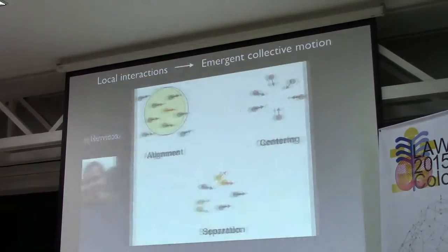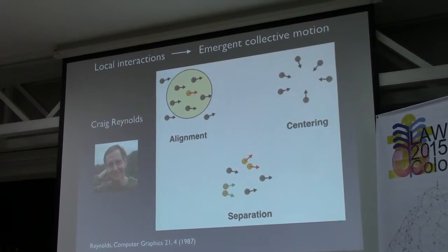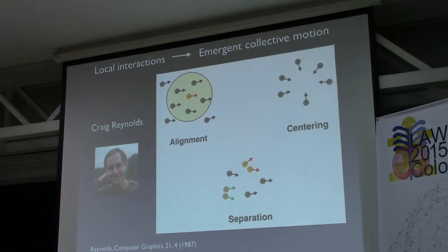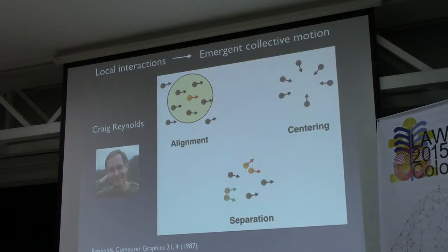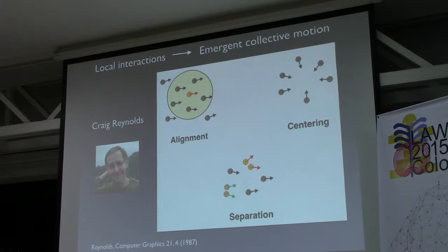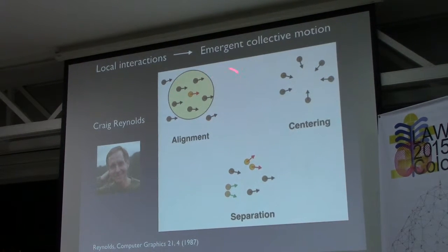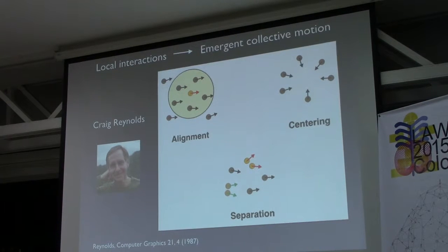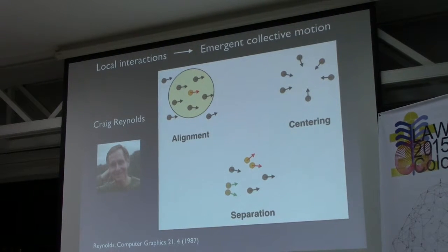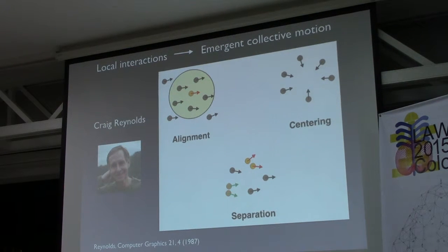In 1987, this guy, a computer systems engineer, was asked to develop simulation for a flock for a movie. He came up with these three basic flocking behavior rules: alignment, that particles try to align their velocity; cohesion, that they try to stay together as a group; and they tend to avoid collision, called separation.